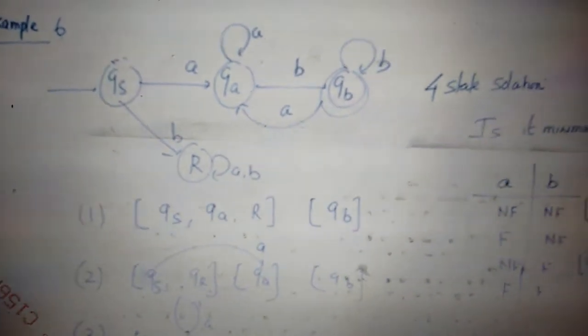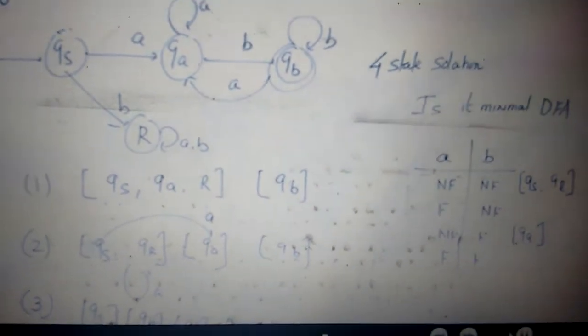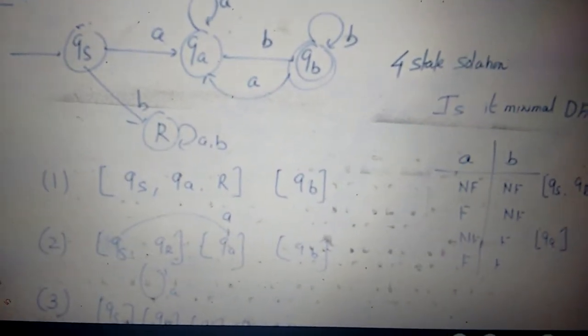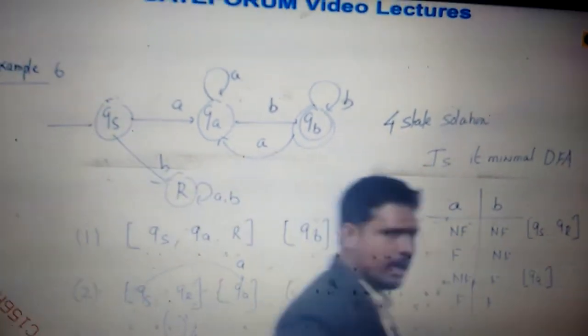If it is not a minimal, then I'll get, let's say, three partition or two partition, but in this particular case, this is the minimal DFA accepting starts with A, ends with B.